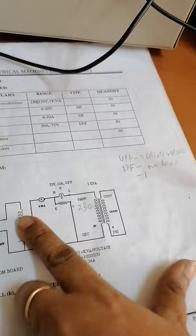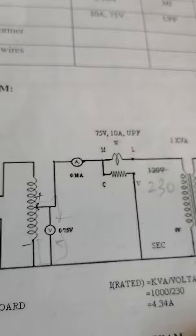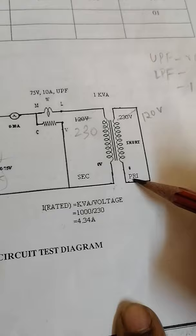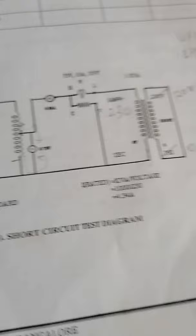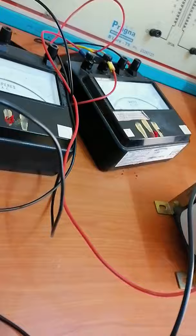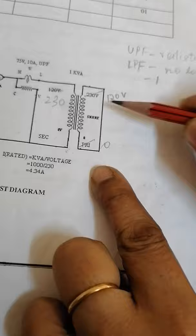Whichever side is connected to the supply is called the primary winding. The secondary side we are short circuiting. Instead of 230V, I am connecting to 120 volts — so 230 and 0 is connected to the primary. If you see here, the meters are connected to the primary side, and the secondary is short circuited with 120 and 0.